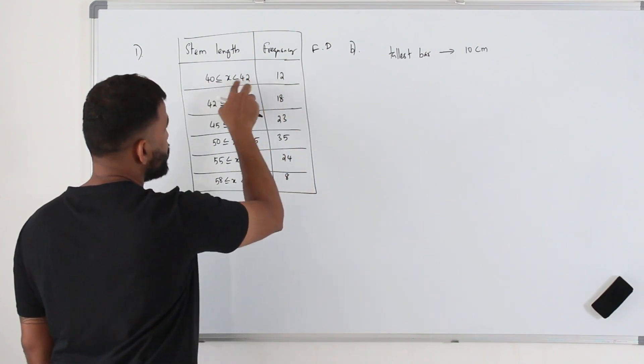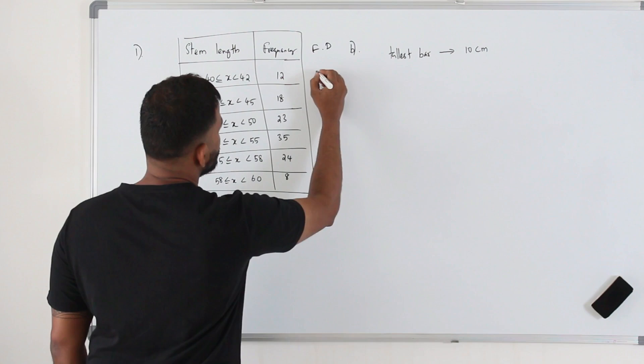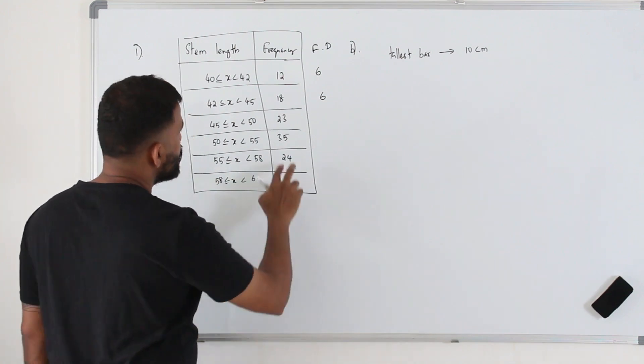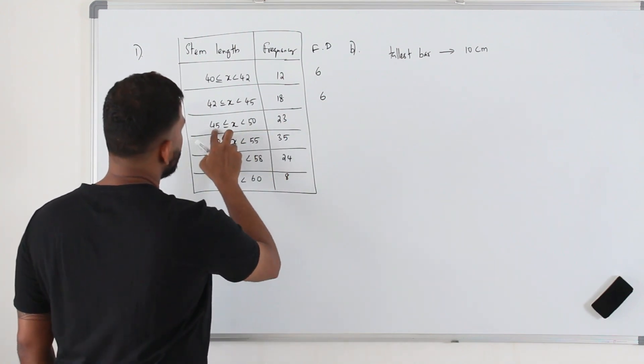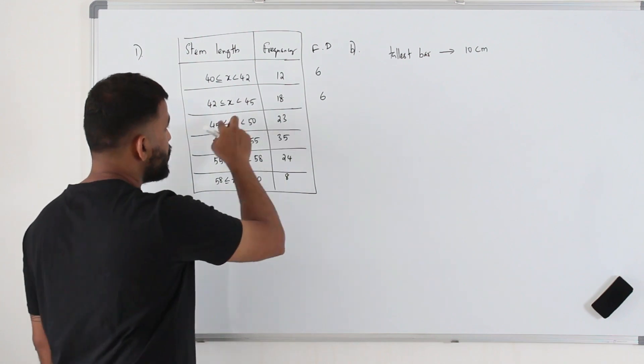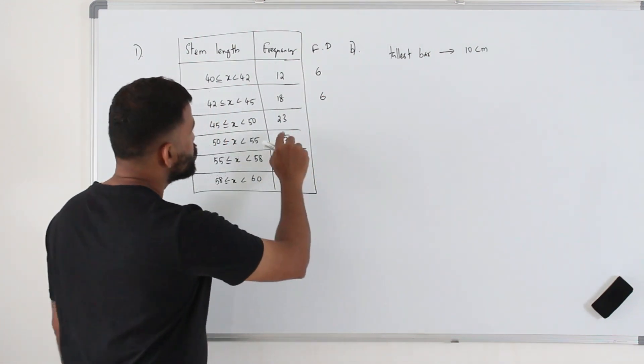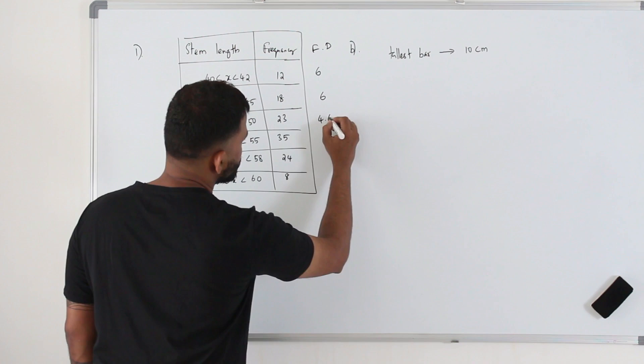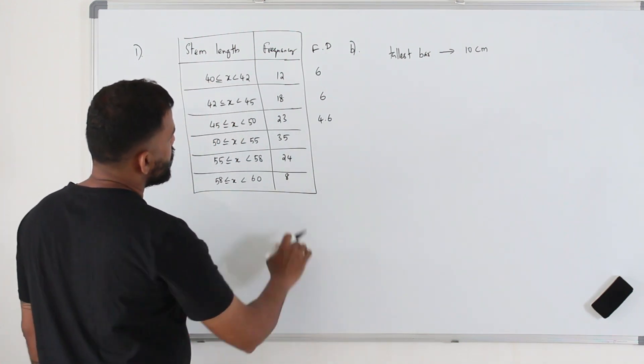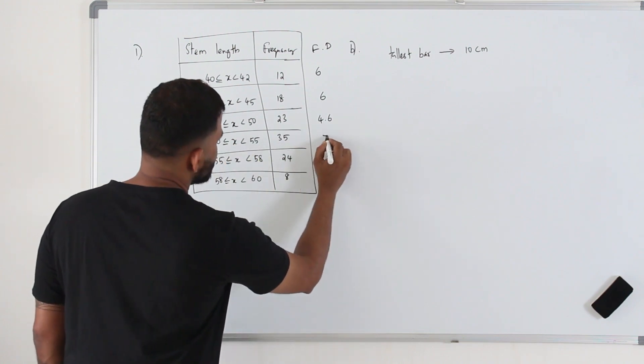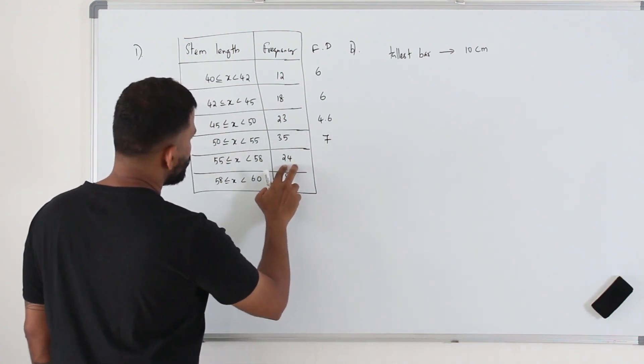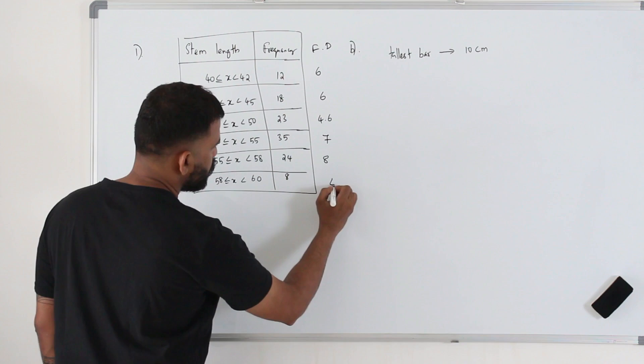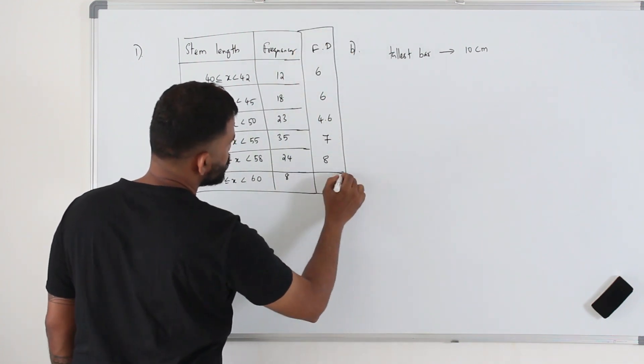So 12 divided by 2, which is 6. 18 divided by 3, we'll get 6 again here. 23 divided by 5, the class width is 5. Frequency divided by class width gives you frequency density. So 23 divided by 5 is 4.6. And then here 35 divided by 5 is 7. 24 divided by 3 is 8. 8 divided by 2 is 4. We got the frequency density here.